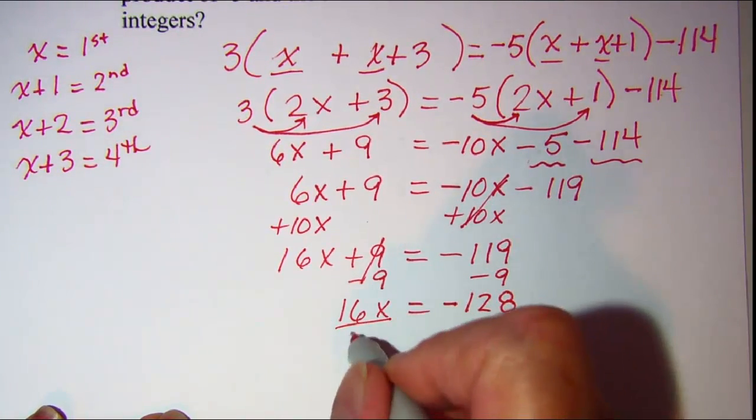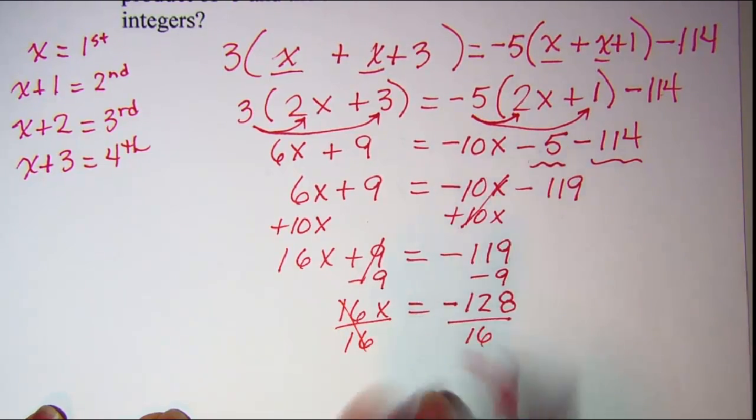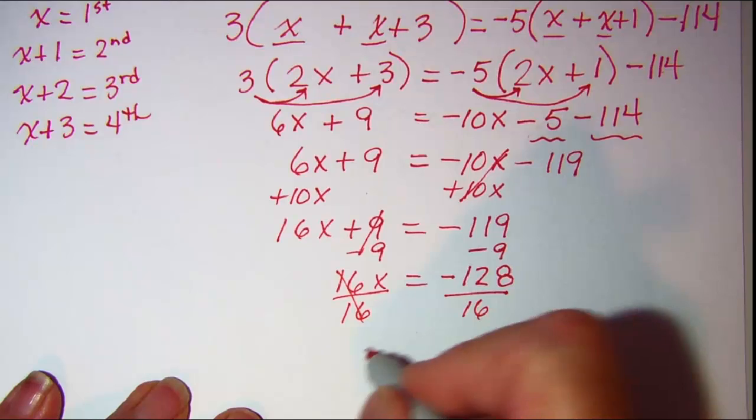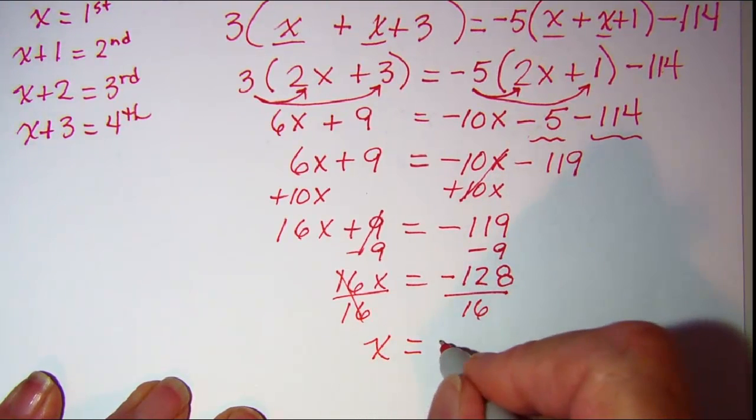Divide both sides by 16. Cancels. And I have x is equal to negative 8.